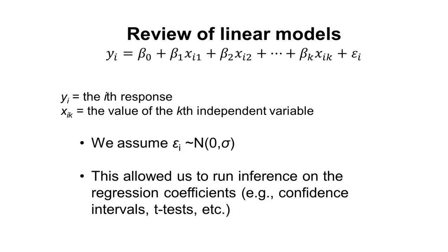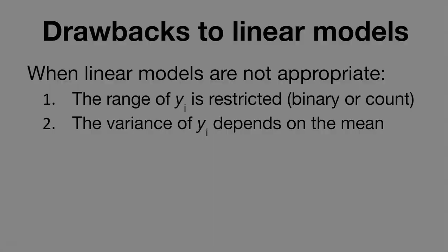We make a big assumption about the distribution of the residuals, which we denote epsilon sub i. We assume they're distributed normally, with a mean of zero and some standard deviation. This allows us to run inference on the different regression coefficients — think about confidence intervals, t-tests, and tests of those slopes comparing them to see whether or not they're different from zero. This is how we've used linear models.